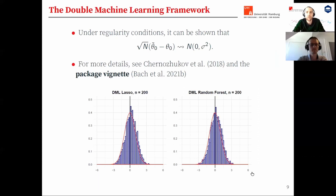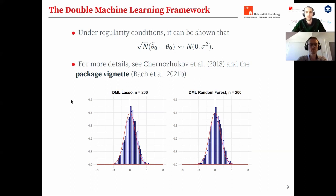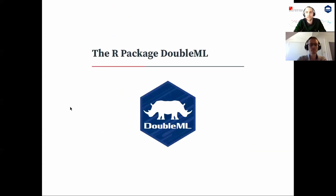Under some regularity assumptions, including all three ingredients, it can be shown that the double machine learning estimator theta-tilde is asymptotically normally distributed. For more details, we refer to the paper by Chernozhukov and co-authors 2018, and our package available online has a more extensive introduction. The updated histograms using orthogonal score and sample splitting now show empirical distributions much more similar to the normal density illustrated by the red solid line. That concludes the theory part.